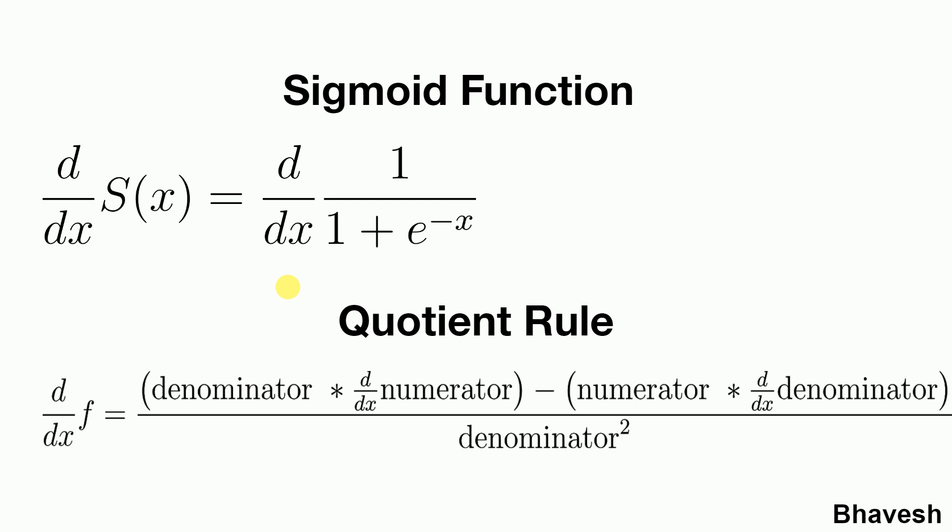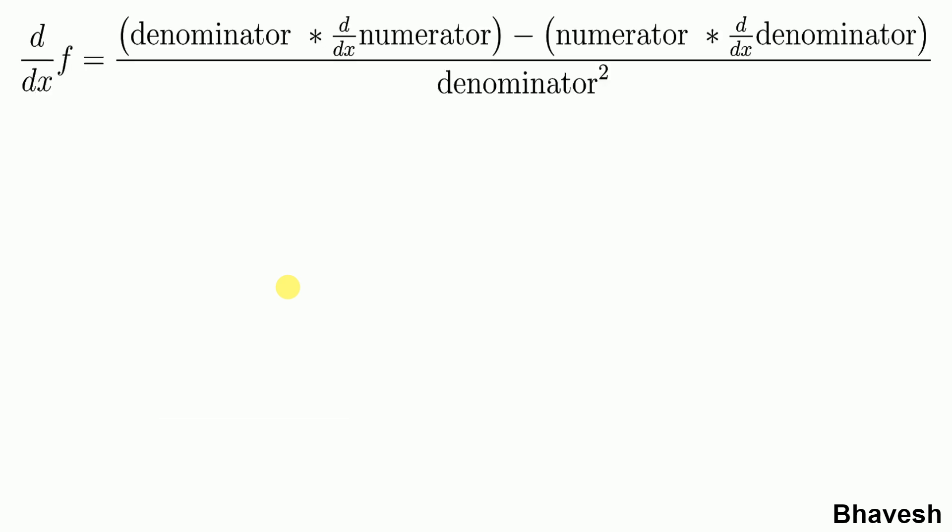Now it may look daunting but this is a very simple example that will help you understand how quotient rule is implemented and how you can find out the derivative of the sigmoid function as well. Let's keep the quotient rule as the headline so that you can always refer back to it while we differentiate our sigmoid function.